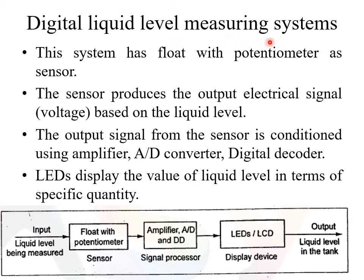Digital liquid level measuring system. The function of this system is to measure the level of liquid in a tank. For that we are using a sensor — the float with potentiometer. The float senses the level of liquid and converts it into a corresponding electrical signal. That electrical signal is then processed using a signal processor, where it can be amplified or converted into a corresponding digital signal.